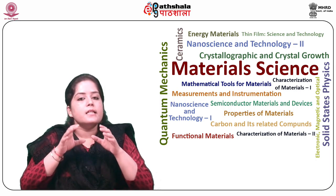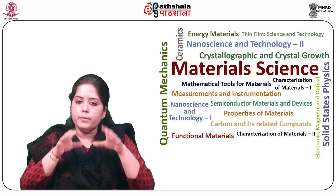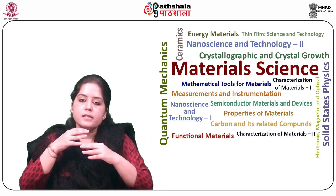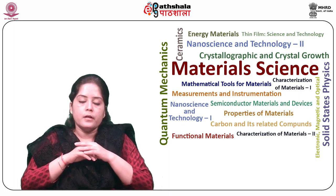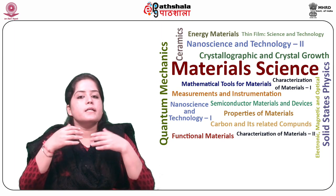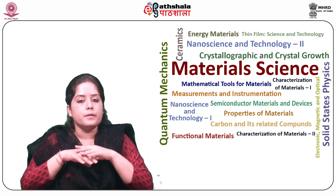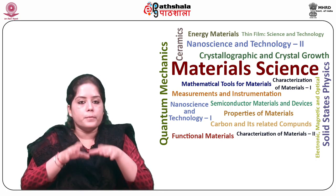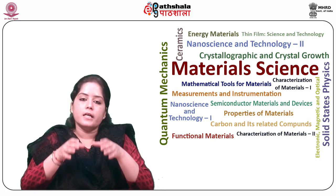In 1931, Max Knoll and Ernst Ruska at the University of Berlin built the first electron microscope that uses accelerated electrons as a source instead of a light source. However, the first scanning electron microscope SEM was built in 1958 due to the difficulties of scanning the electrons through the sample. The electron microscope works exactly the same as the optical microscope except its use of a focused accelerated electron beam.